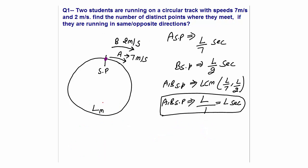The second case is when they are running in the same direction. A is running at a speed of 7 and B at a speed of 2. The starting point meeting time will be the same — L seconds. As the race starts, A will move forward since his speed is more than B's, and the gap will start increasing. After one second the gap will be 5 meters, after two seconds 10 meters, and so on. When the gap becomes L meters, both will meet. The relative speed is 5 meters per second, so after L/5 seconds the first meeting will take place.